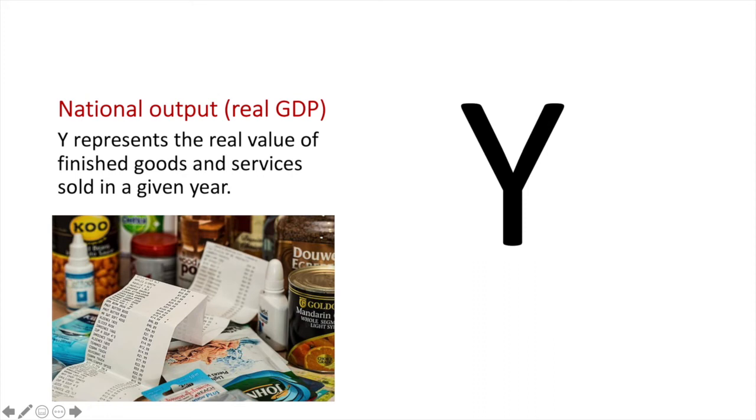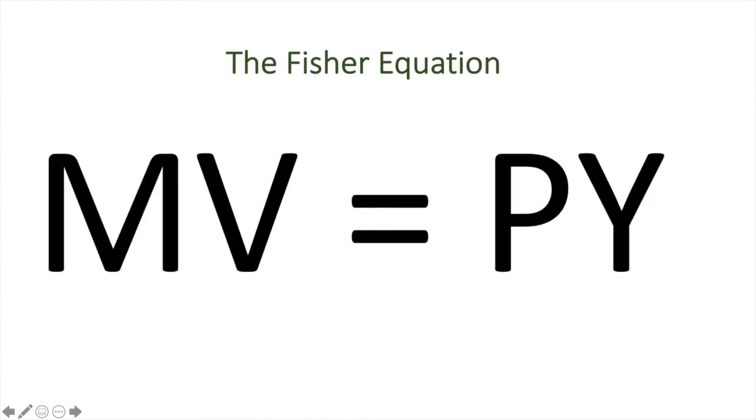Y represents the real value of finished goods and services sold in a year. This means it is equal to GDP expressed in the prices of the base year, not the current year. Therefore, the money supply times the velocity of circulation will equal the price level times the value of real GDP.